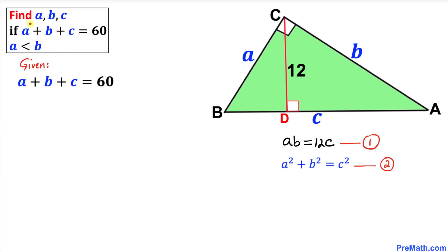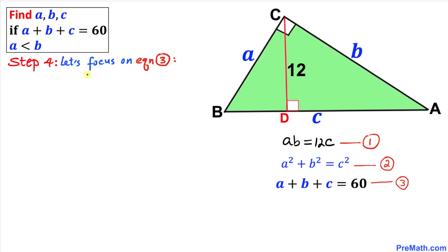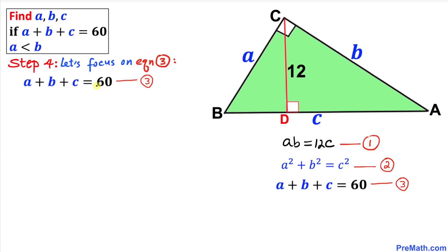Moreover, we're given that A plus B plus C equals 60 — I'll call this equation 3. Now let's focus on equation 3. We'll move C to the right-hand side, so the equation becomes A plus B equals 60 minus C.